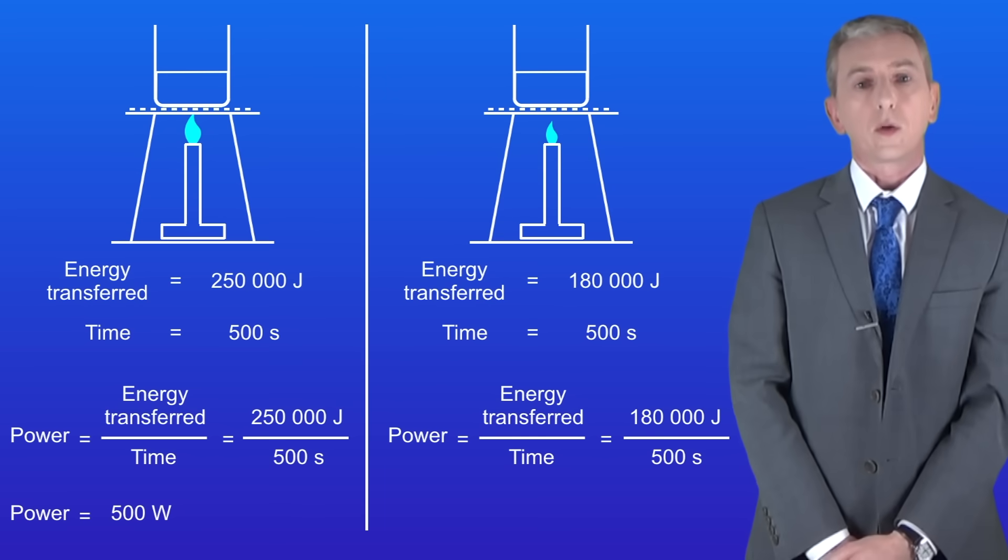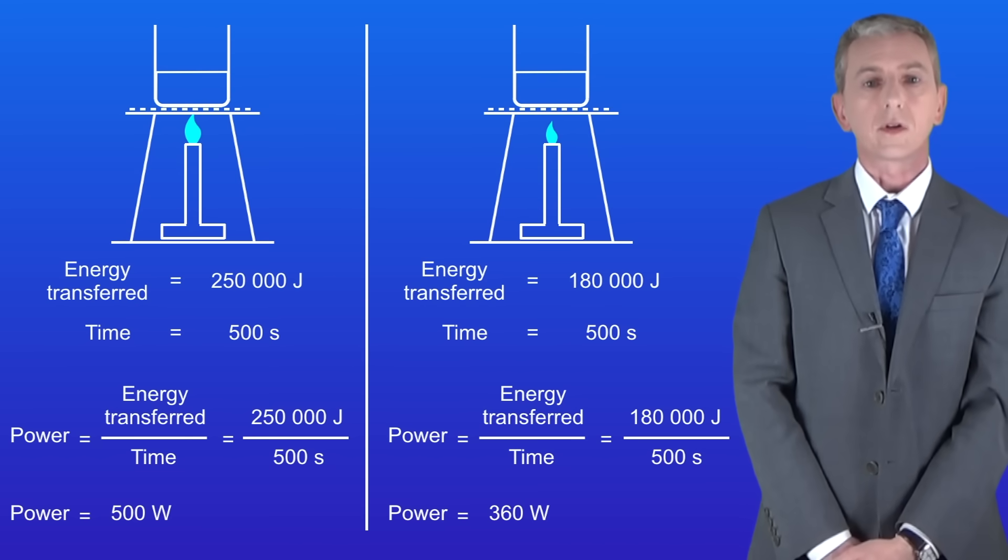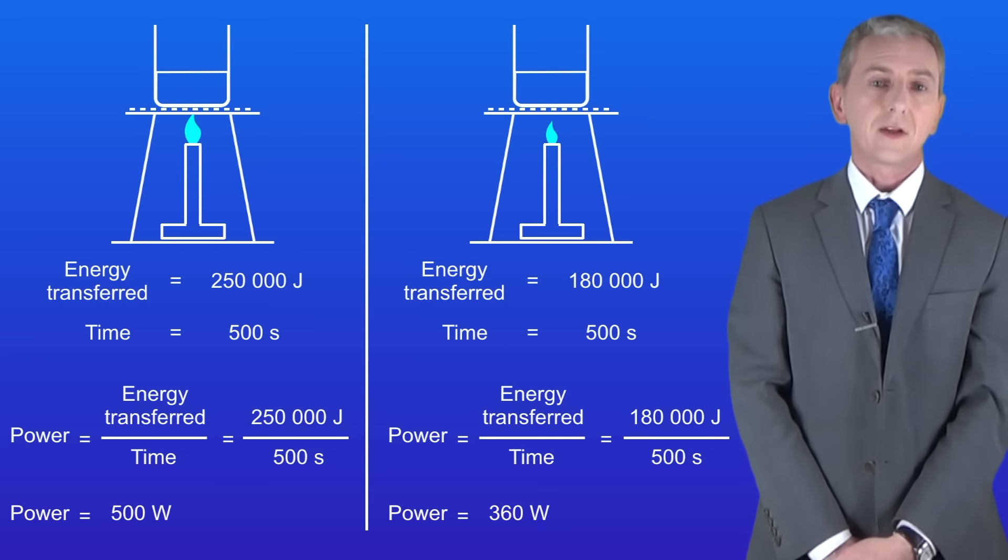Looking at the right hand Bunsen burner we're transferring 180,000 joules of thermal energy in 500 seconds. Putting these numbers into the equation gives us a power of 360 watts. So as you can see calculating power is relatively straightforward.